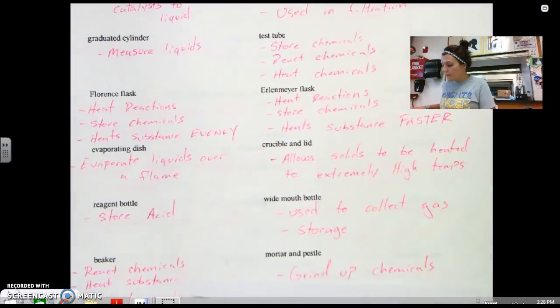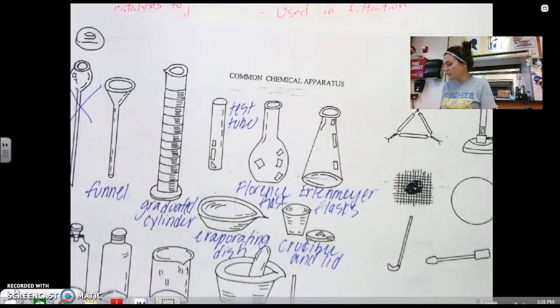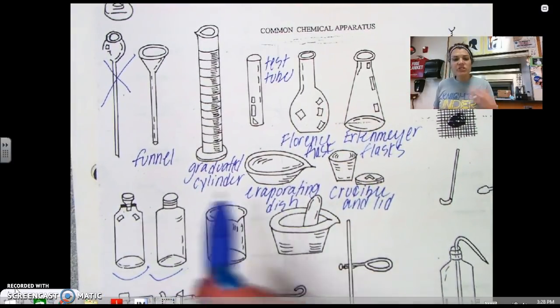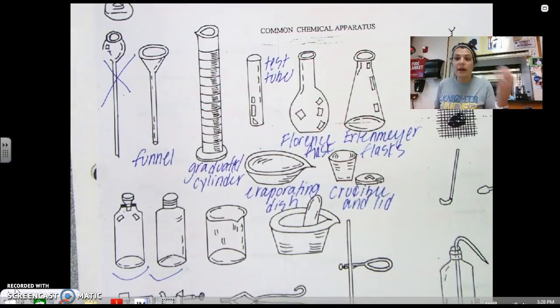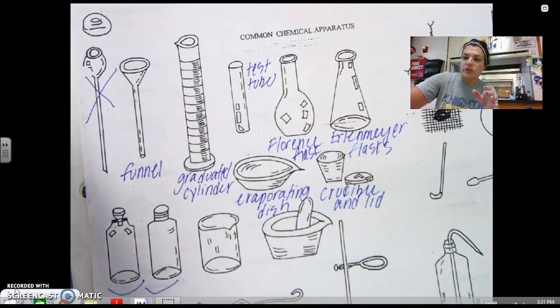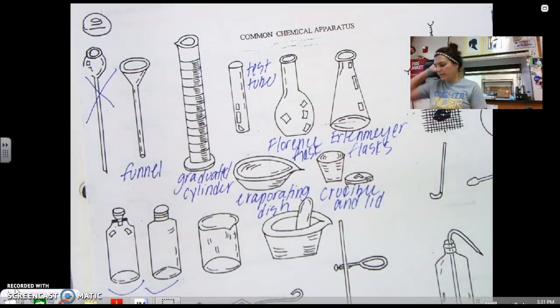These next two things is a reagent bottle and a wide mouth bottle. I'm not so concerned that you guys know these two by name. But just realize that if you see a bottle, more than likely it has chemicals in it, especially if you're inside of the chemistry lab. And most of the time, these guys will be labeled. This would obviously hold something that can't be in touch with light. And that's why it's a darker bottle. But most of the time, you'll see things in here. And one thing about these bottles is if you take chemicals out, do not put it back in. You're going to contaminate my substances. So those are the two reagent bottles. But don't worry about writing anything down for them.